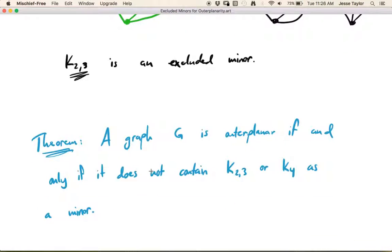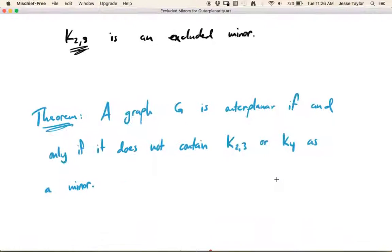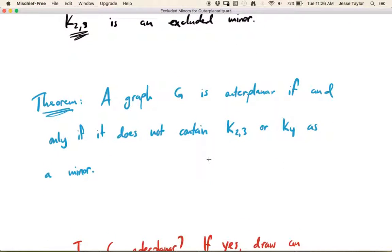And it turns out there's only one other one. A graph is outer planar if and only if it doesn't contain K23, that's the one we just went through, or K4 as a minor. And those are the only two. So let's just think about K4 very quickly. We're not going to go through this entire process like we did for K23. But this is one drawing of K4. You can see this is not outer planar. And there's not really going to be a good way to draw this so that it is outer planar. And if you go through the process like we just went through above, try deleting a vertex, try deleting an edge, try contracting an edge, you'll see that this is also a minimum bad example. And it turns out that these are the only two.